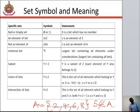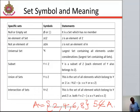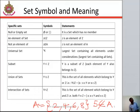Then we can say a universal set. A universal set is the largest set containing all elements under consideration. Like you have a set of even numbers and a set of odd numbers — then the natural numbers contain all these sets. So we can say that a universal set is a set of natural numbers.